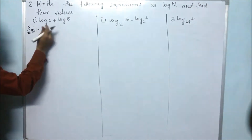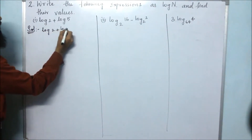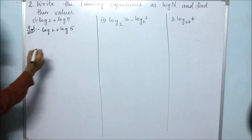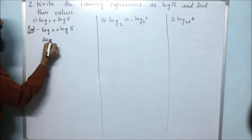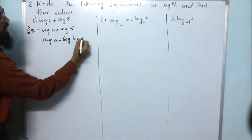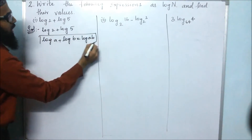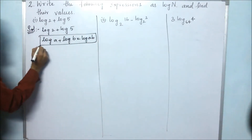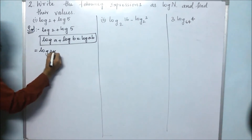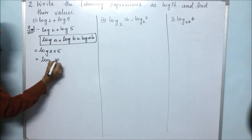The first bit is log 2 plus log 5. Here I am going to use the formula: log a plus log b equals log a·b. So we can write log 2 into 5, which gives us log 10.